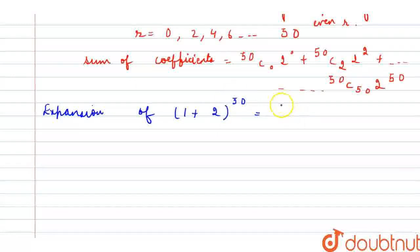So, that would be equal to 50C0·2^0 + 50C1·2^1 plus so on up to 50C50·2^50.